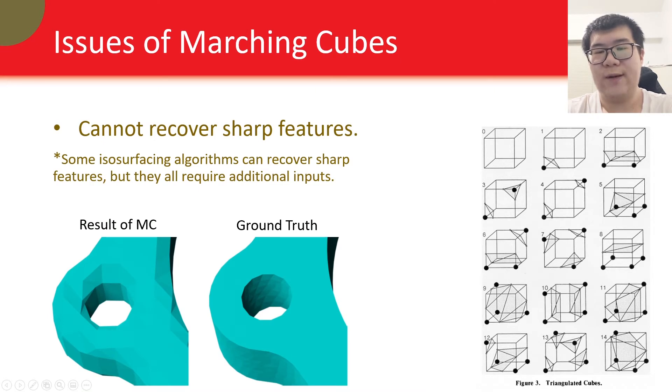So what are the issues of marching cubes? First of all, it cannot recover sharp features. You can see the output of marching cubes and ground truth at the bottom, where it's obvious that all the sharp edges are not properly reconstructed by marching cubes. And the reason is quite simple. If you look at the tessellation templates of marching cubes, you will find that they are not able to represent sharp edges or corners inside the cube. There are isosurfacing algorithms that can recover sharp features, but they all require additional inputs.